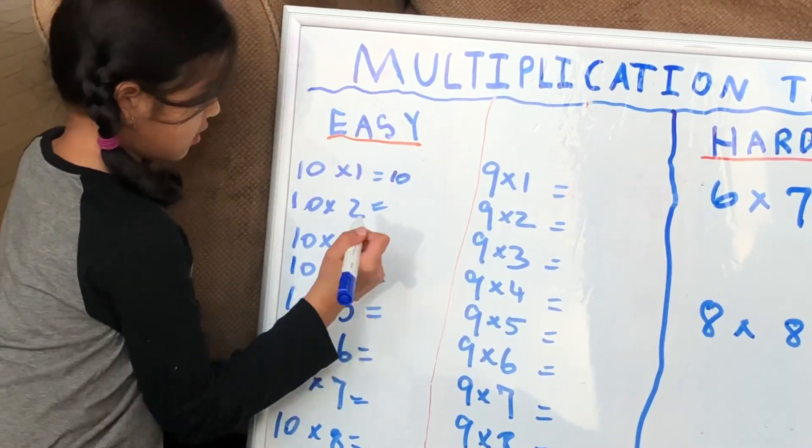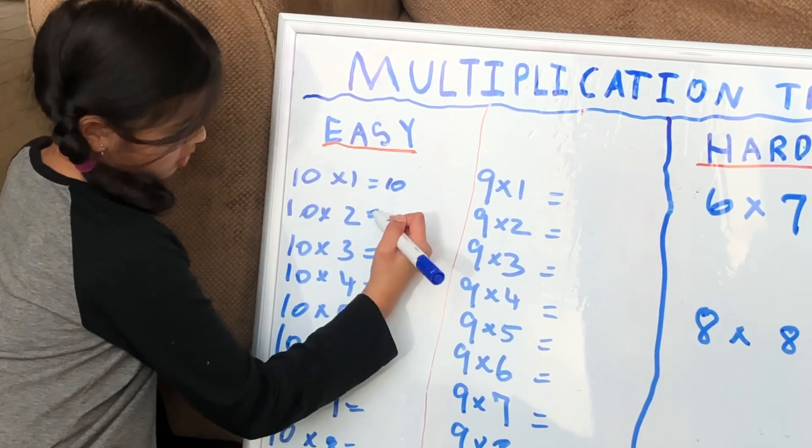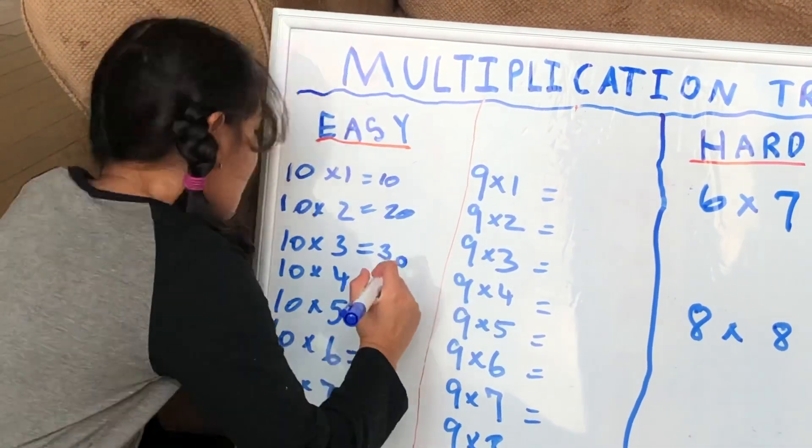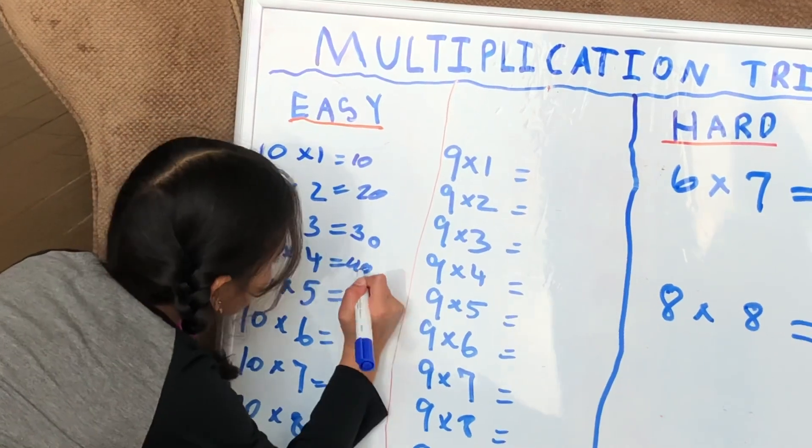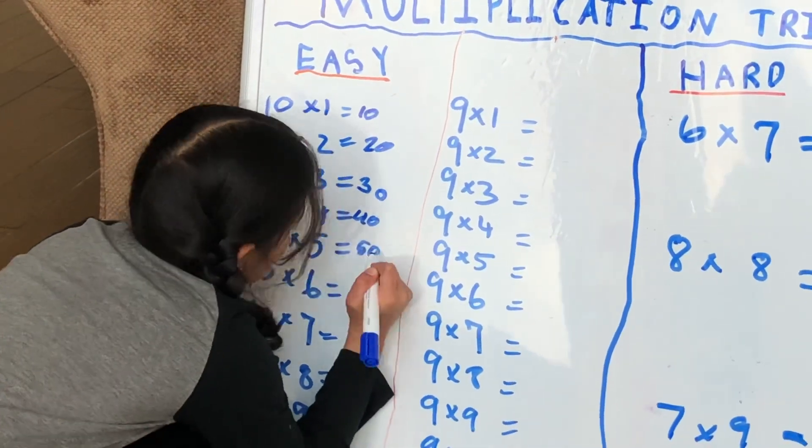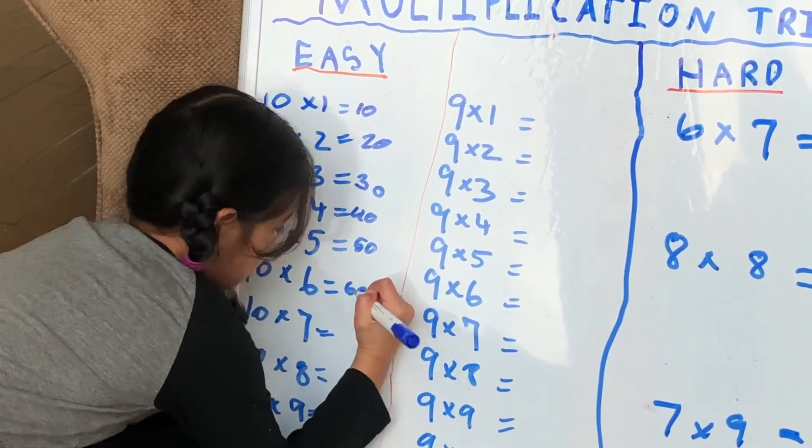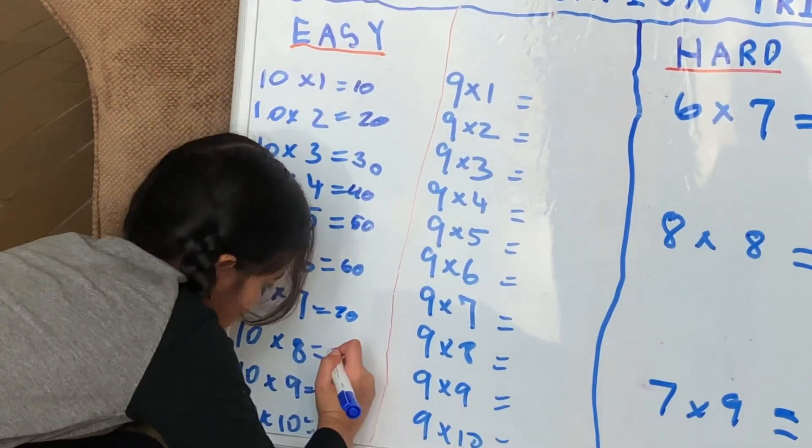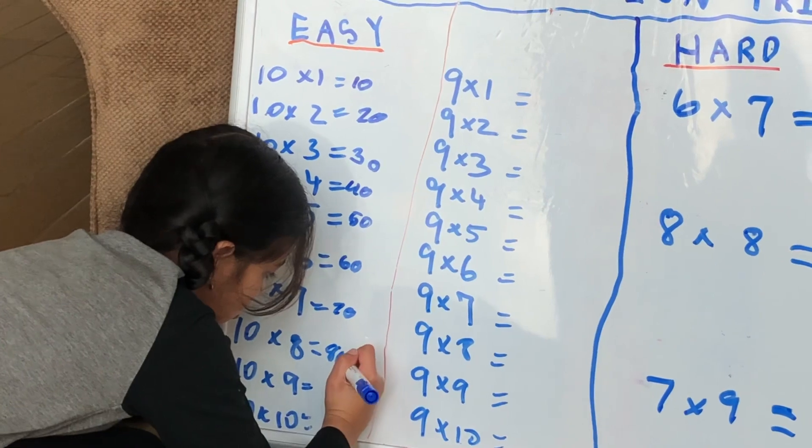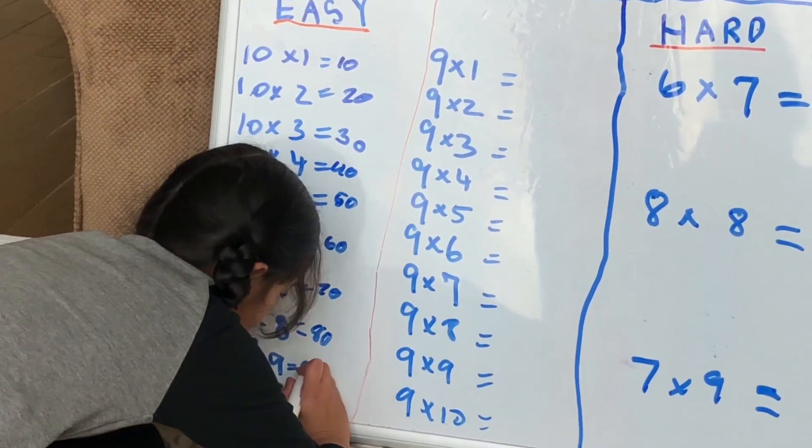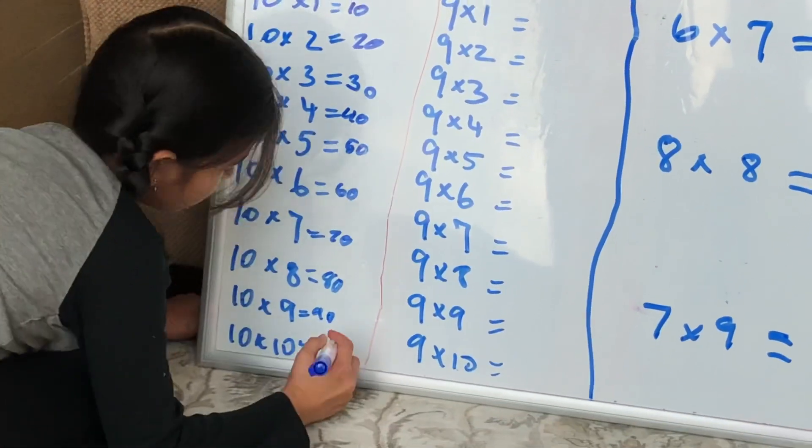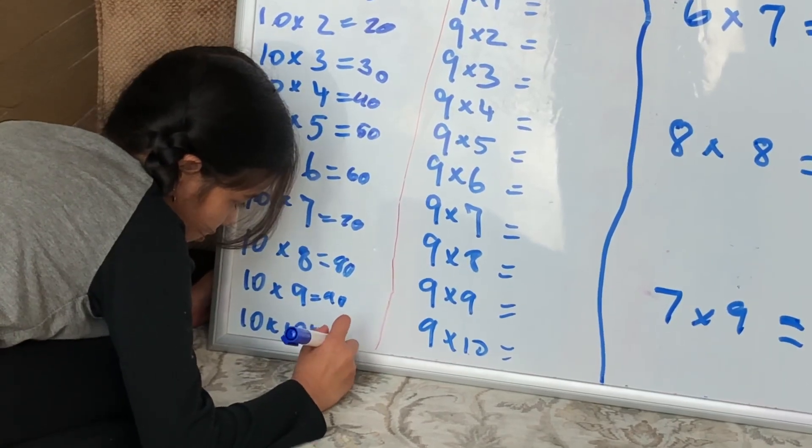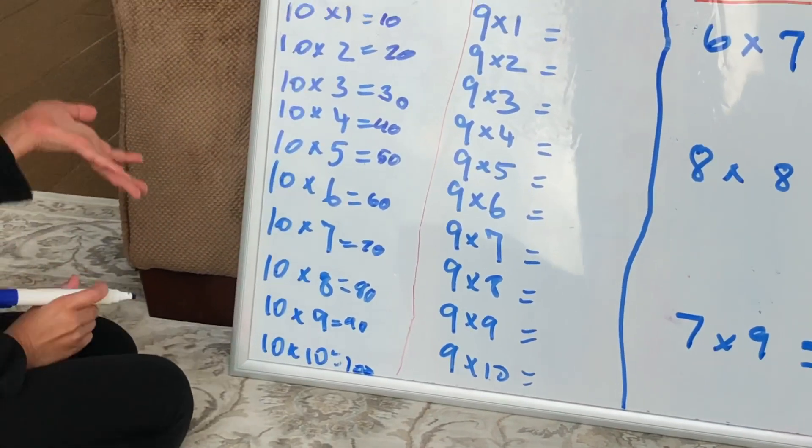That equals 10. And then put a 0 over here, that equals 20, 30, 40, 50, 60, 70, 80, 90, and this will be 100. This is basically counting by 10s.